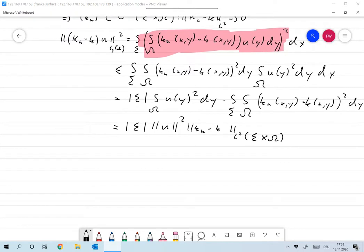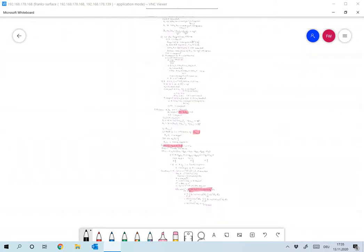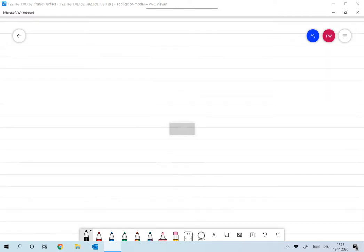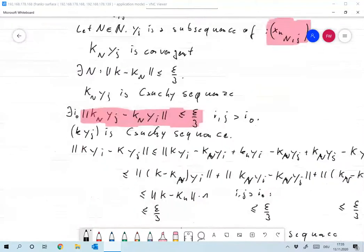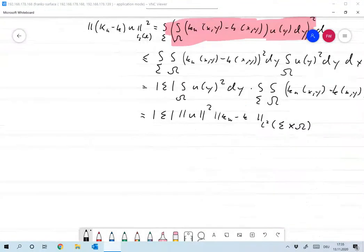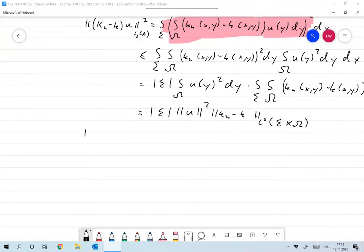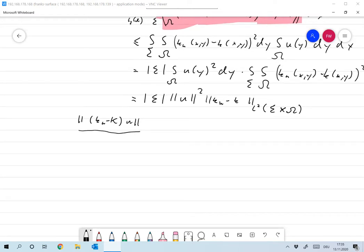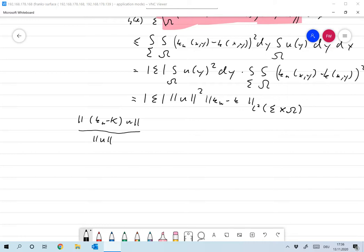So, finally, we have that the norm of K_n minus K of the operators over the norm of U is less than or equal to the size of sigma times the norm of K_n minus K in L2 of sigma times omega. And this goes to zero independent of U.